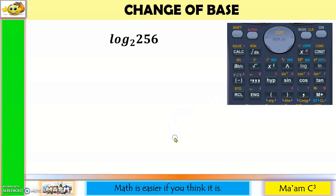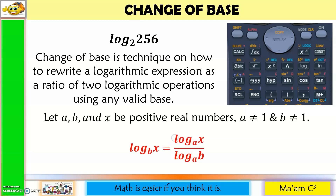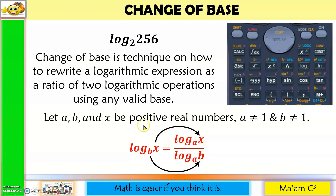This is where change of base comes in handy. It is a technique on how to rewrite a logarithmic expression as a ratio of two logarithmic operations using any valid base. So let a, b, and x be positive real numbers, where a is not equal to 1 and b is not equal to 1. If you are given the logarithm of x to the base b, you can rewrite it as a ratio. Notice that x comes from the argument, and b comes from your base. And a is any number you wish to use, as long as it is a positive real number and not equal to 1.